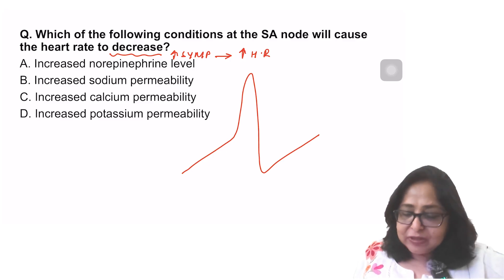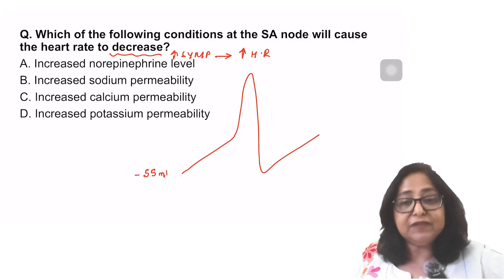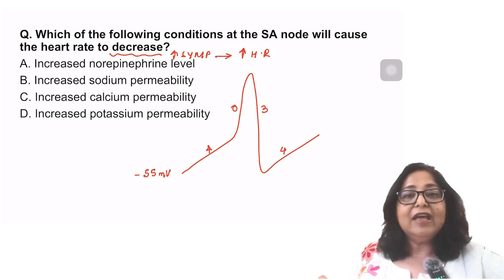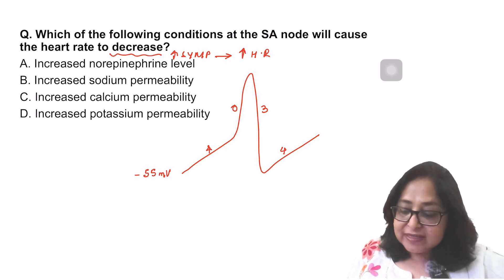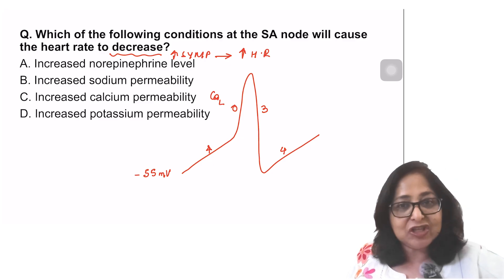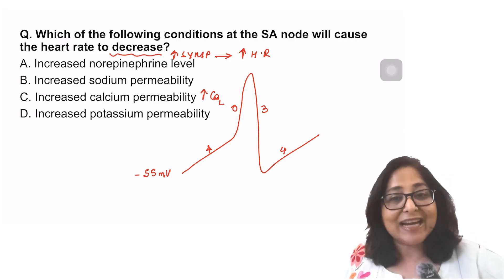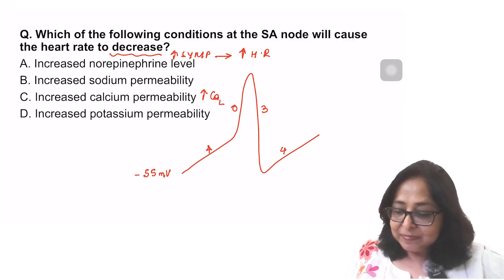The pacemaker potential looks like this. The resting membrane potential is minus 50 to minus 60 millivolts, approximately minus 55 millivolts. There are three phases: phase 0, phase 3, and phase 4. Phase 0 is depolarization because of a calcium influx through calcium L channels. Phase 3 is repolarization because of a potassium efflux.